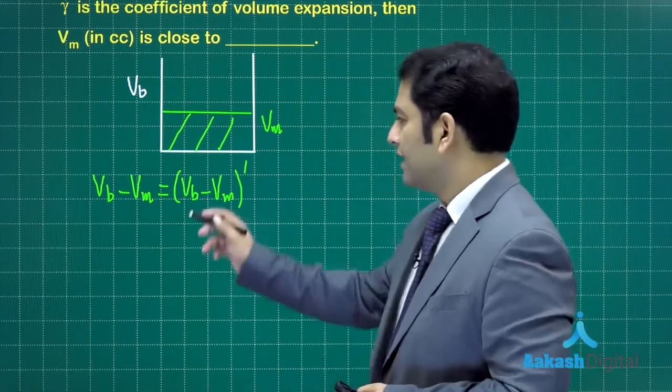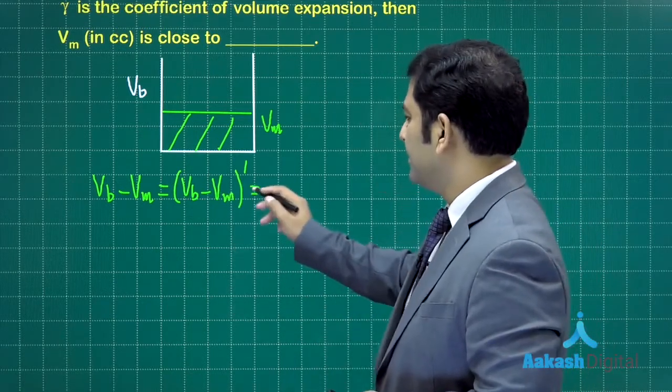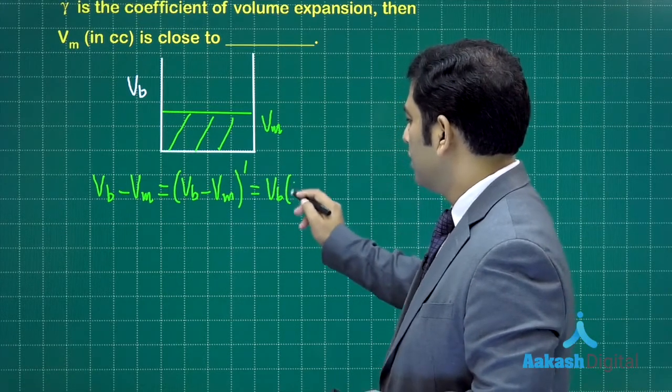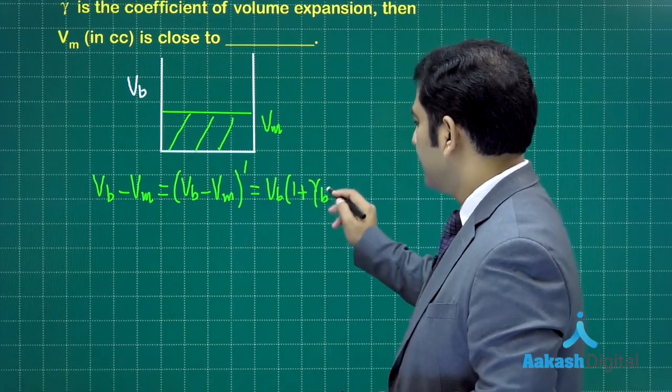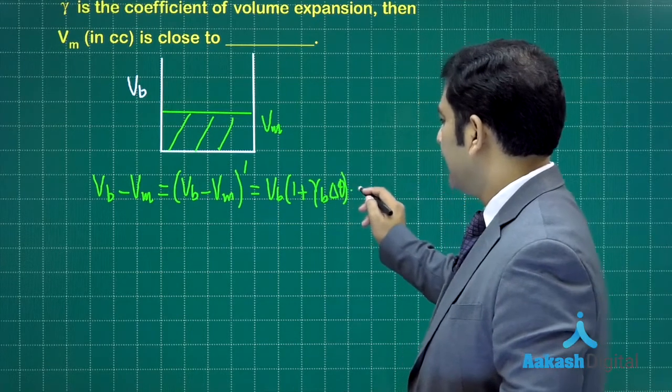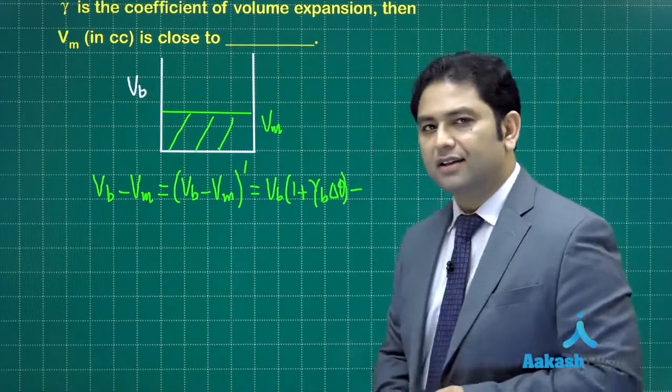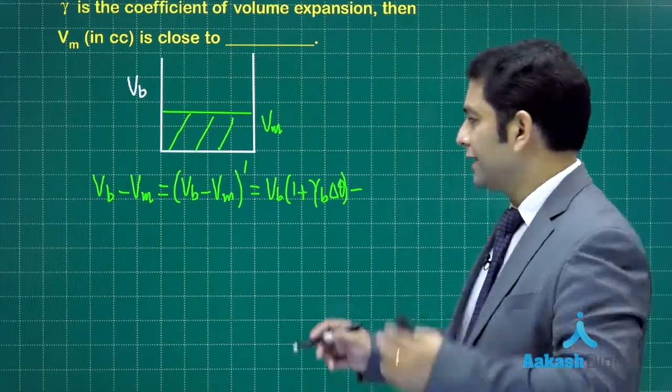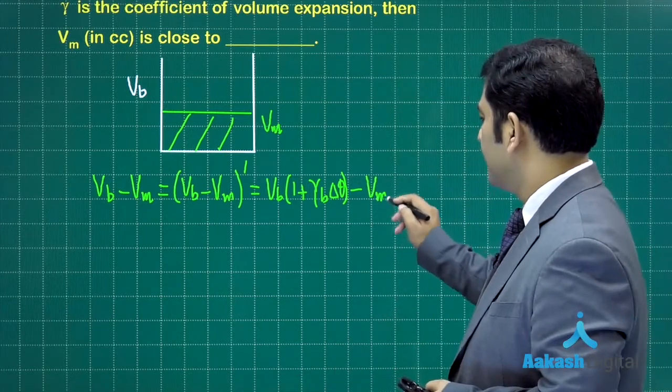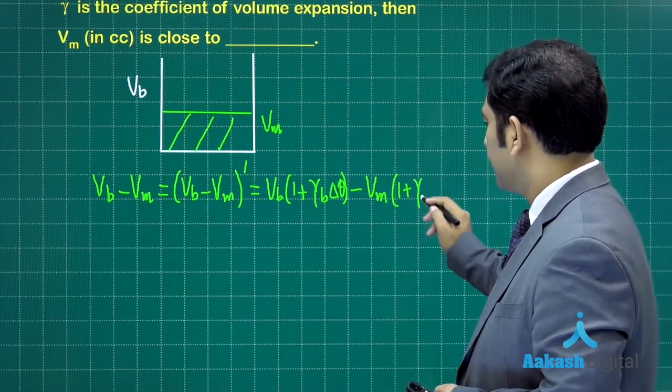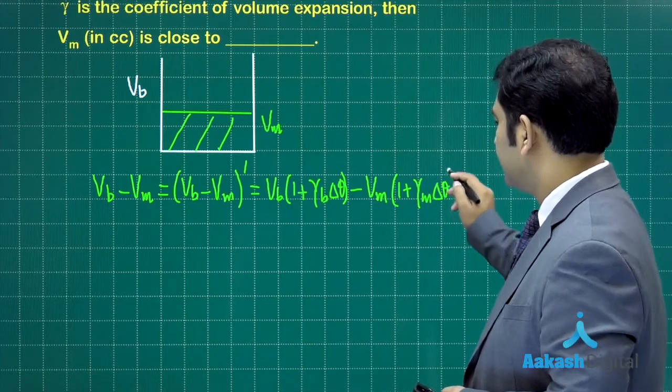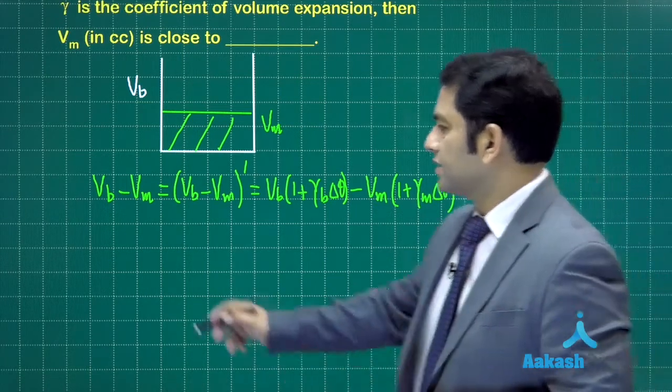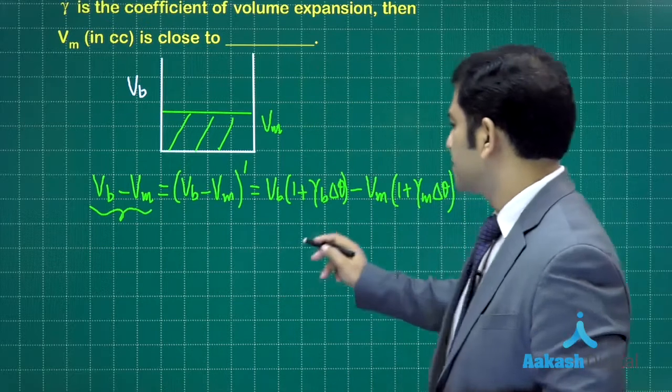Let's say Vb dash, the final one, will be Vb (1 plus gamma b delta theta), and additionally minus the volume of mercury at the higher temperature, which would be Vm (1 plus gamma m delta theta). So this is how it goes.